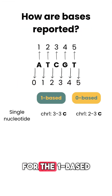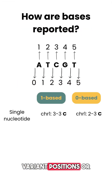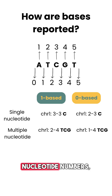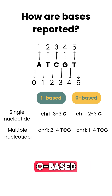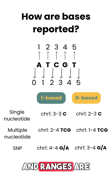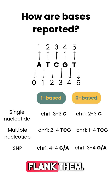For the one-based coordinate system, single nucleotides, variant positions, or ranges are specified directly by their corresponding nucleotide numbers. Whereas for the zero-based coordinate system, single nucleotides, variant positions, and ranges are specified by the coordinates that flank them.